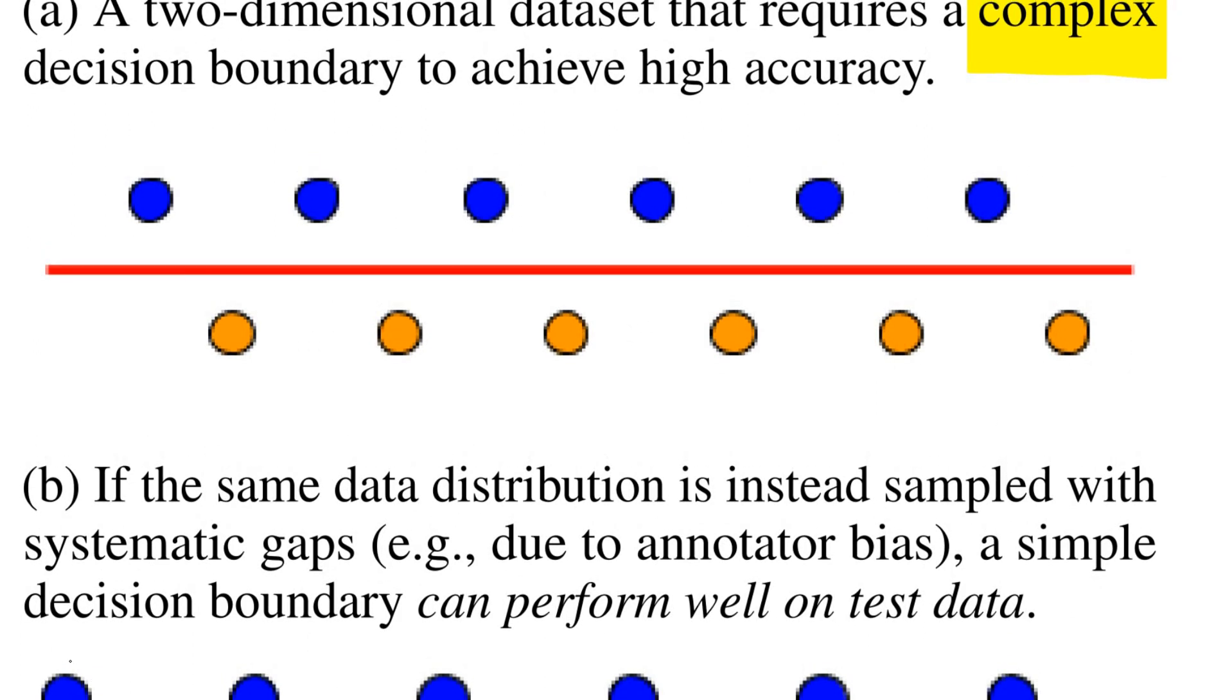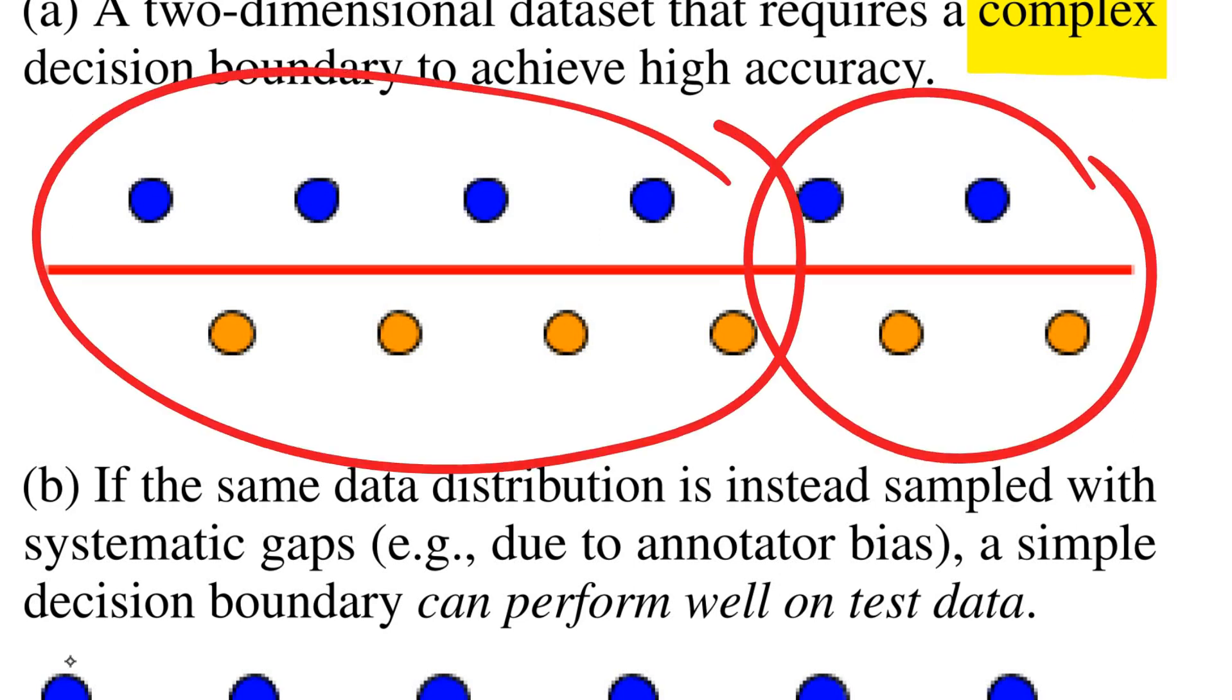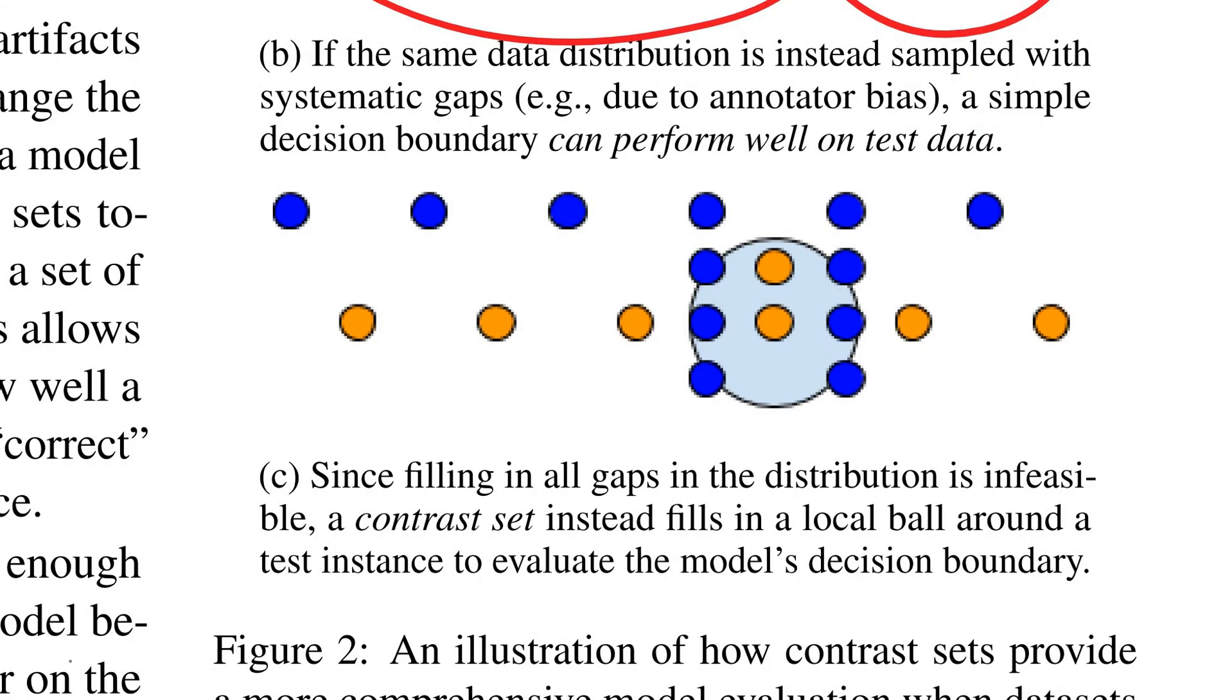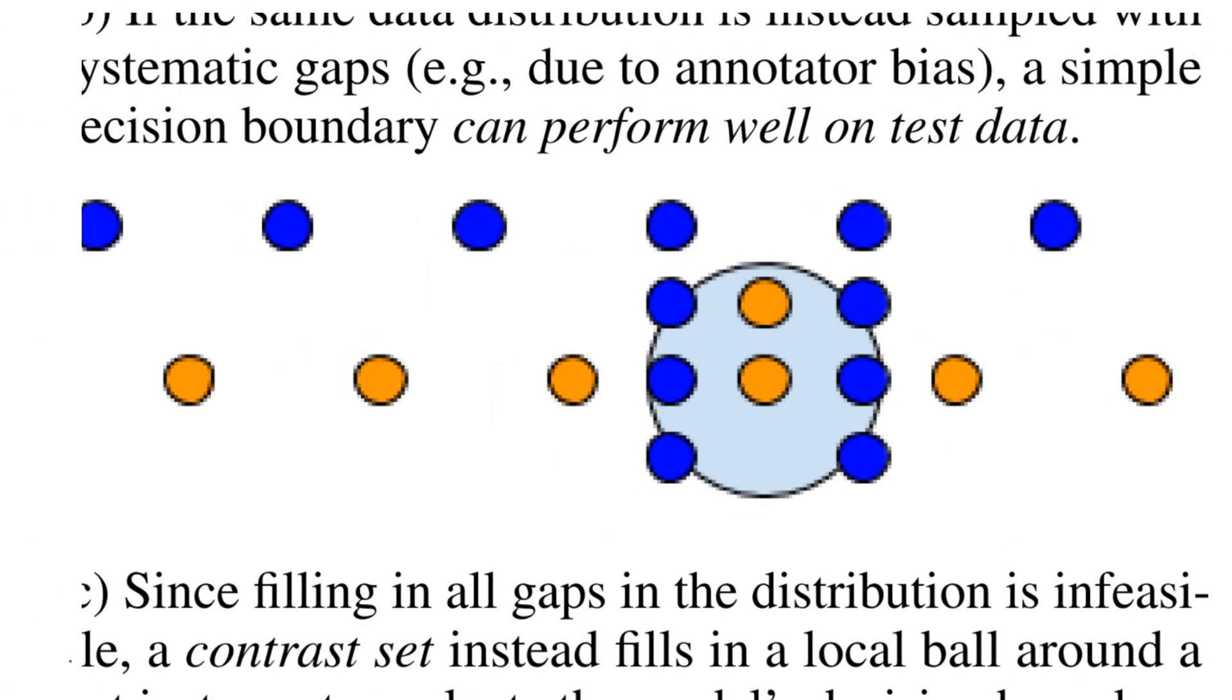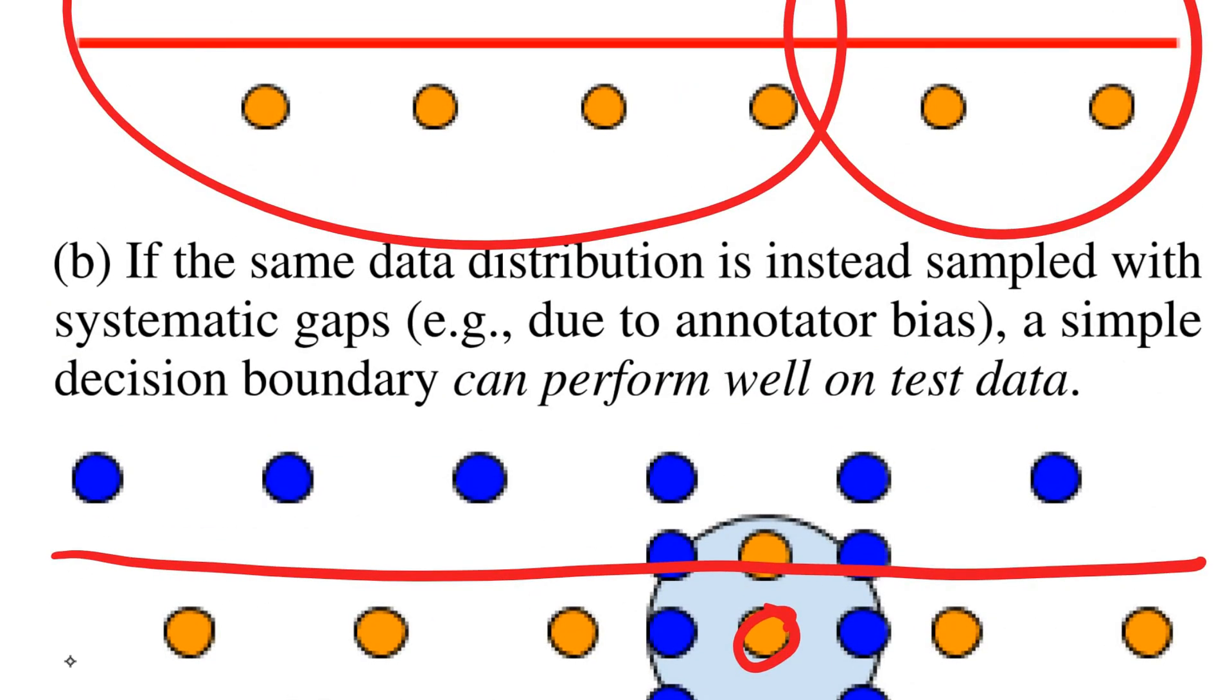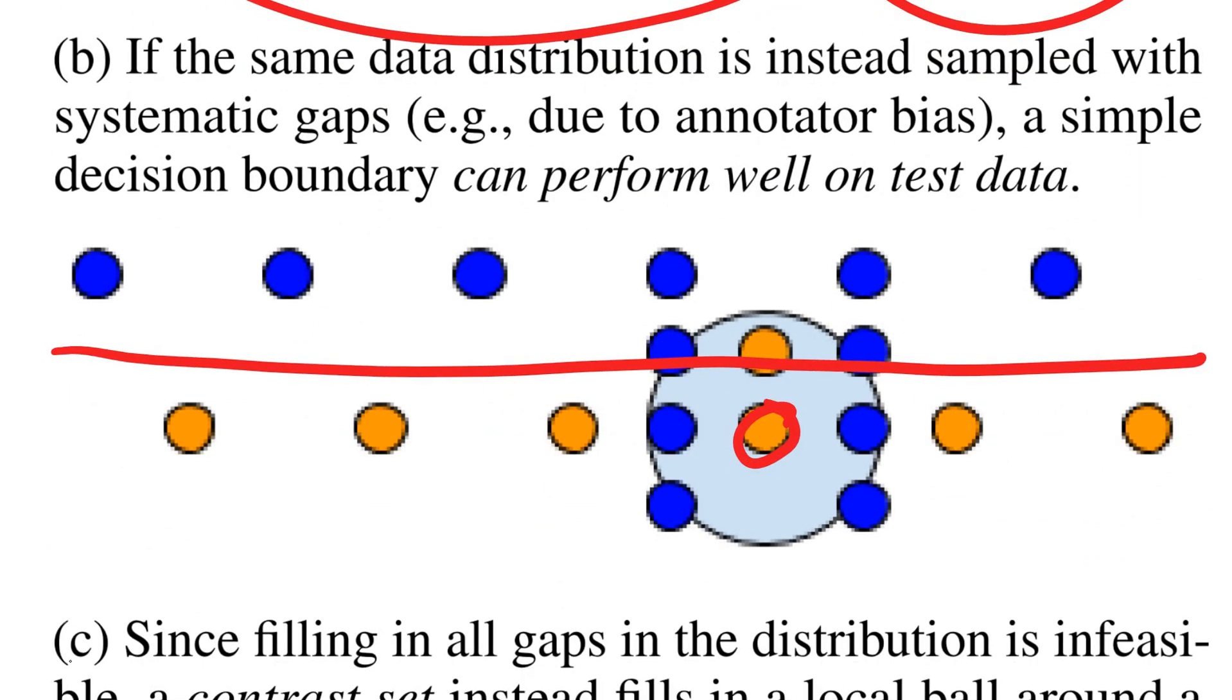And if we now the problem is if we collect the data set like this and we simply say well these ones are the test set and these ones are the train set, it will generalize well to the test set but it will not generalize well to what we actually want. And therefore the authors say well if we introduce these contrast sets here then you see that the decision boundary that we found will not perform well on these contrast sets. So they would say we take one example of the test set, this is this example right here, and we would perturb it to make it change its label or in this case one of them where the label remains, that we would perturb it meaningfully.